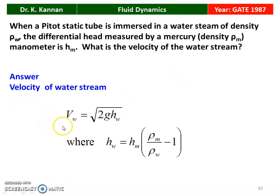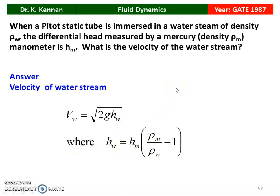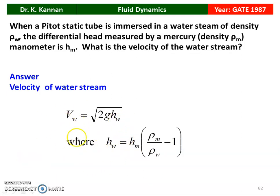Velocity of the water stream: V_w equals square root of 2g·H_w, where H_w is the head of water column. The measurement is in head of mercury column, so we convert: head of water column equals head of mercury column multiplied by (density of mercury divided by density of water) minus 1. This gives H_w. Substituting H_w into the equation, we calculate the velocity. We will solve one problem using this equation later.